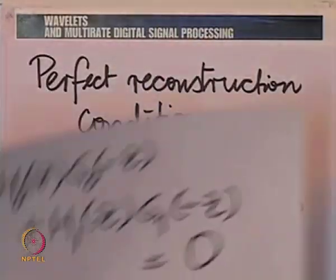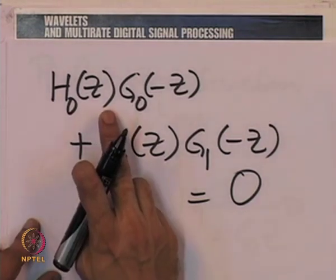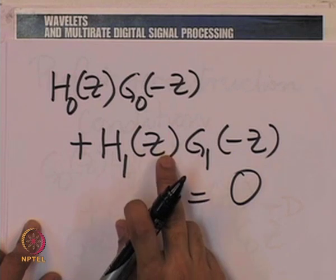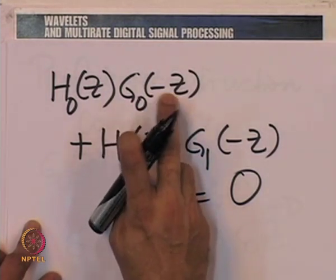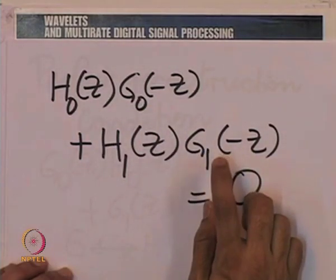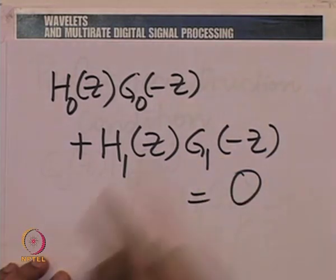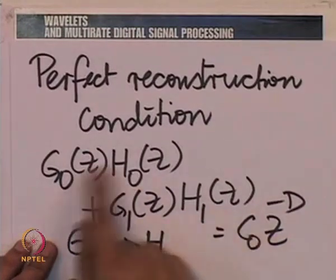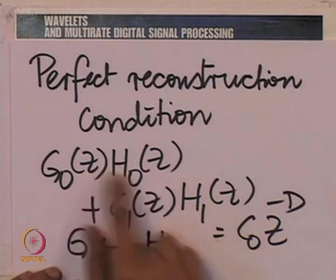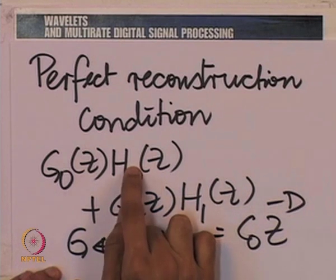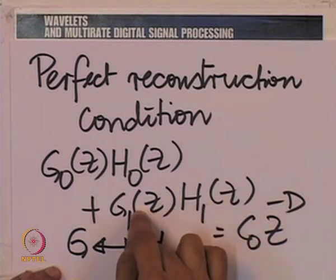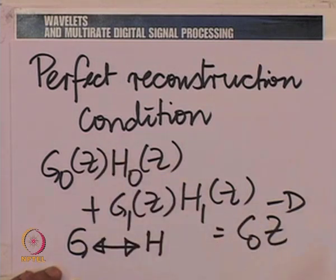So the synthesis low pass filter has become the analysis low pass filter and the synthesis high pass filter has become the analysis high pass filter. This becomes the aliasing cancellation condition for the interchanged filter bank. As far as the perfect reconstruction condition goes, we do not need to do anything — it is already an interchanged condition. Therefore, if H_0 were the synthesis low pass and G_0 the analysis low pass, we would still have perfect reconstruction for this rearranged two-band filter bank.